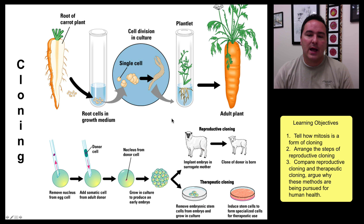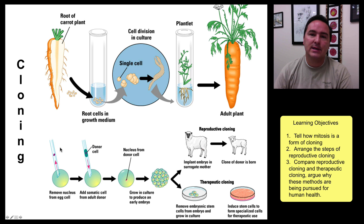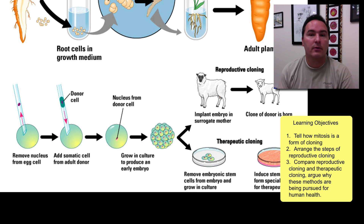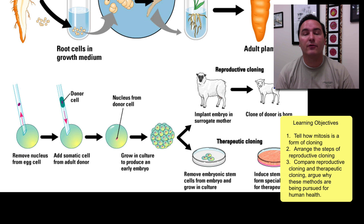The other type of cloning that people more commonly think about is reproductive cloning, which is where you clone a new individual. The way that we do this is we take an egg cell from an organism. You could do this from a frog — you could take frog eggs before they're fertilized — or you could take human eggs from fertilization clinics, where they go in and actually take eggs out of a female and do in vitro fertilization inside of the clinic.